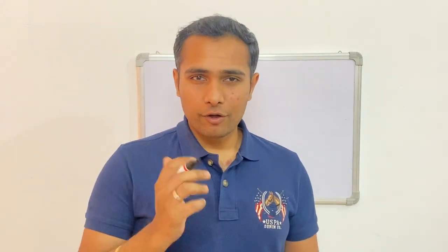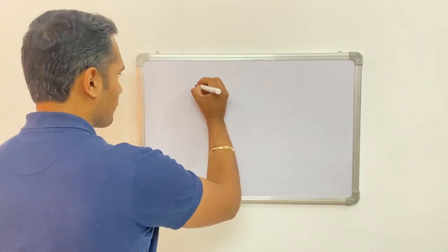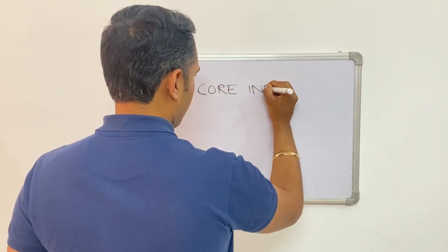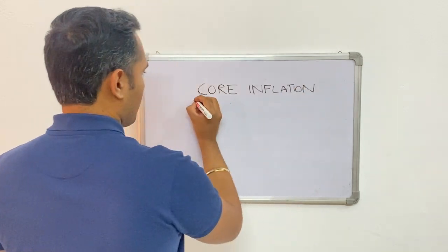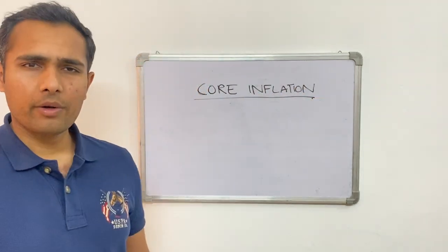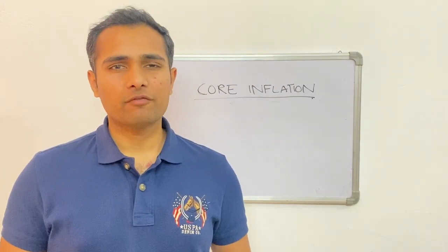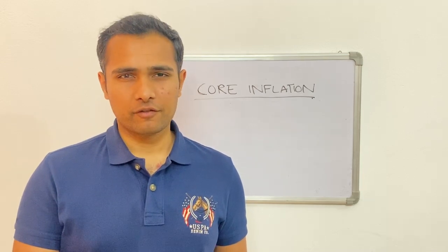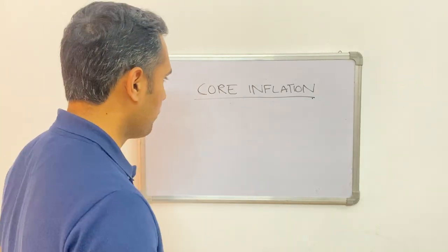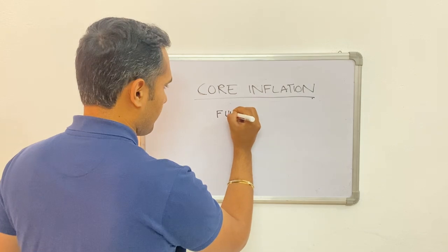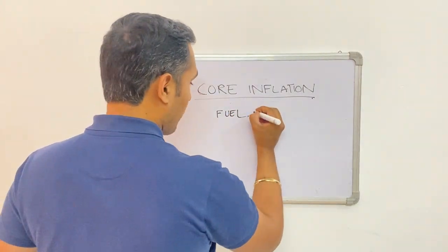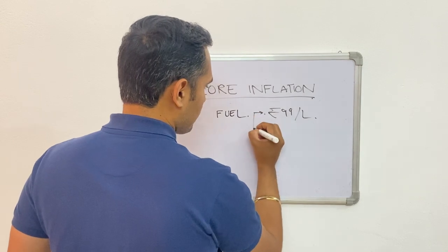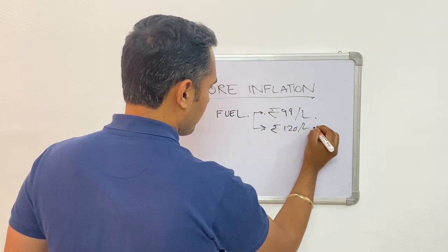Now let's talk about one of the key aspects of inflation: core inflation. Core inflation is a little different from general inflation. When we measure general inflation, we include all goods and services. However, some goods and services are highly volatile — for example, fuel prices can be 99 rupees per liter one month and 120 the next.